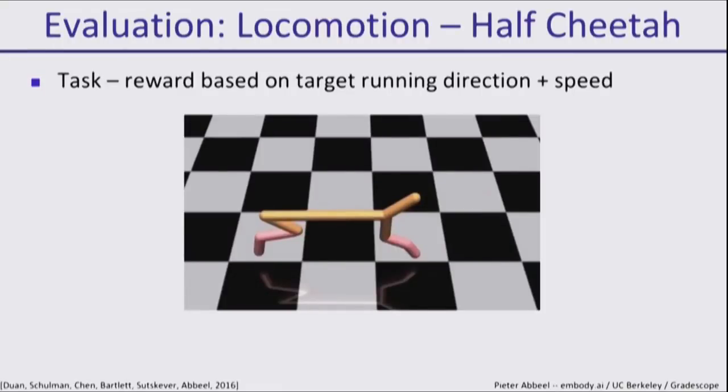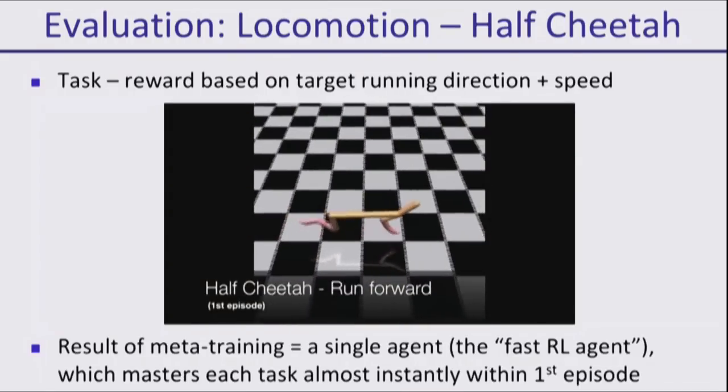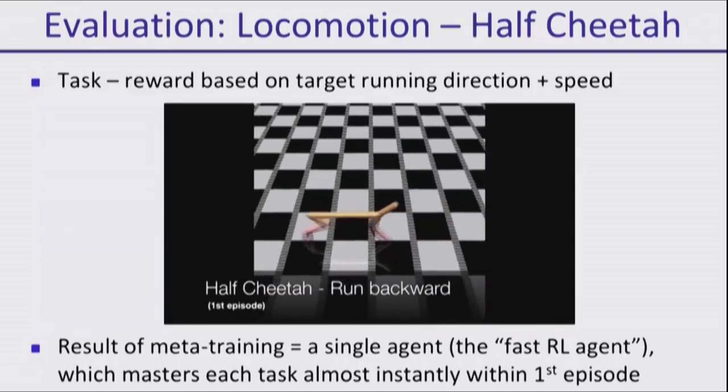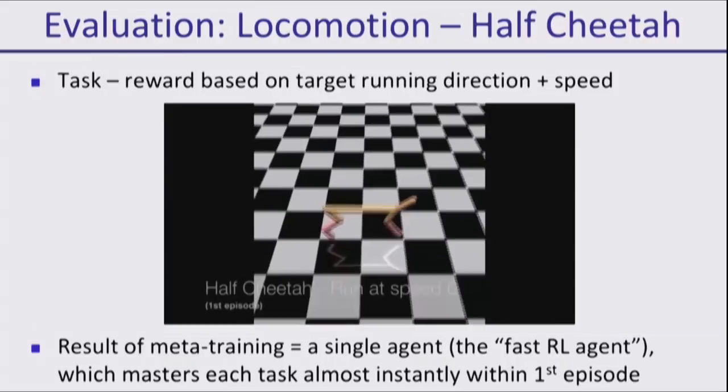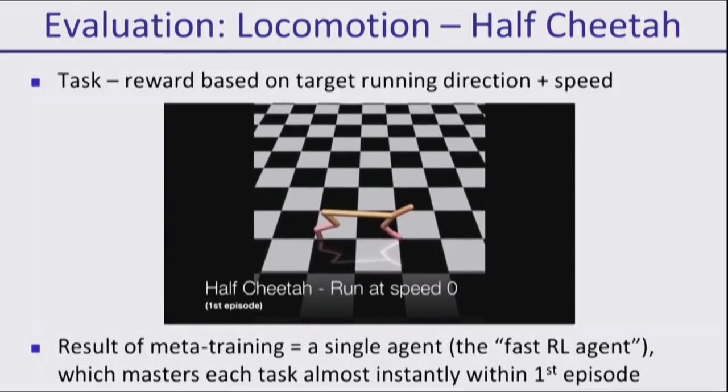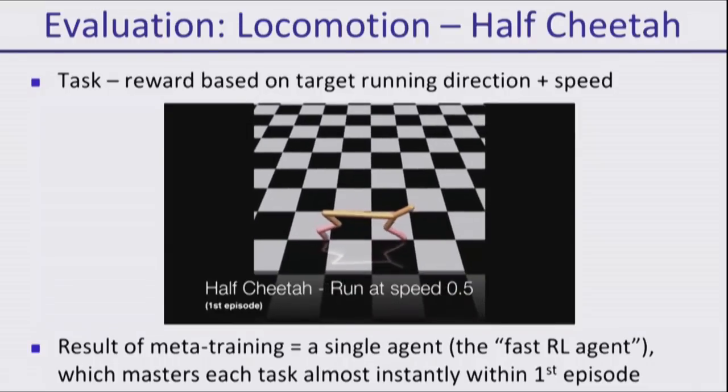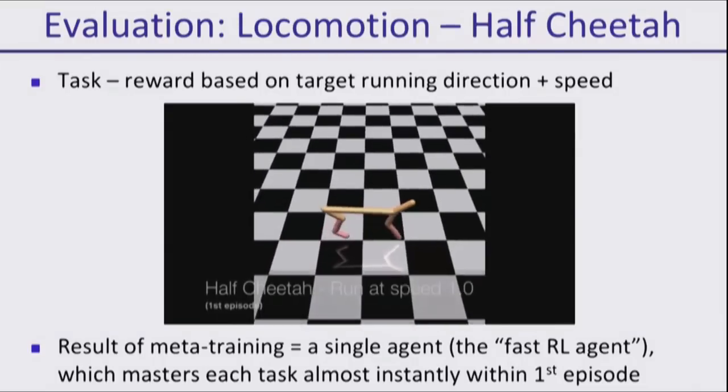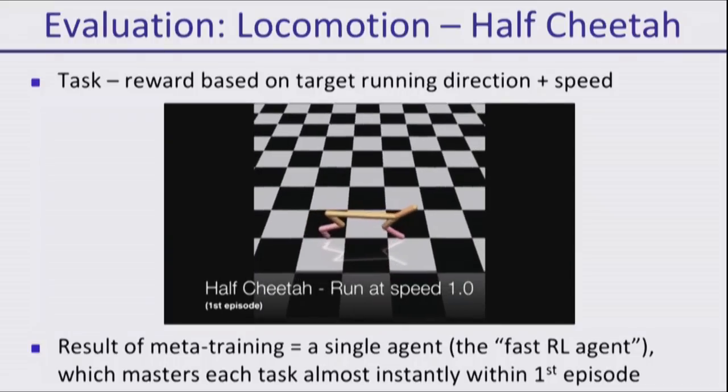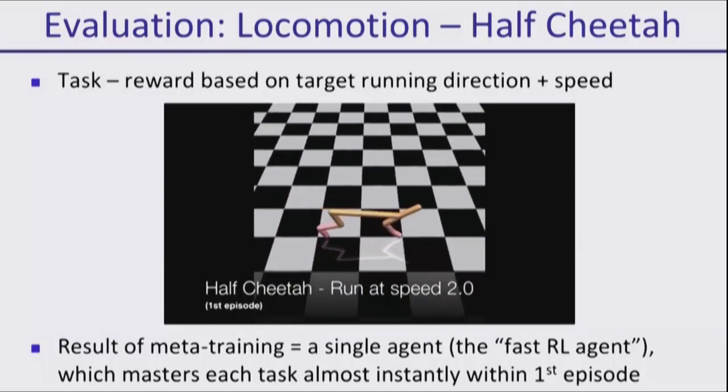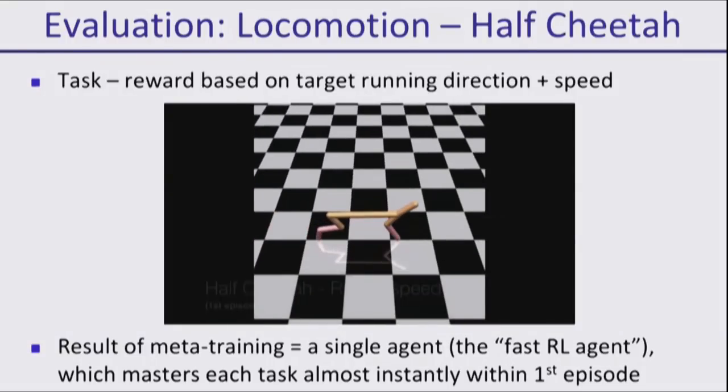Here's another example. Let's say we want an agent that is really good at adapting what it needs to do when controlling this cheetah robot. Different tasks here correspond to different speeds. Here the goal is run forward as fast as possible. Here the goal is run backwards as fast as possible. Now the goal is to run at zero speed, which is staying in place. What we're watching here is the fully trained meta-trained agent being dropped in a new environment, which means a new target it's supposed to achieve. In the first episode, we're watching it adapt to what it's supposed to be doing.